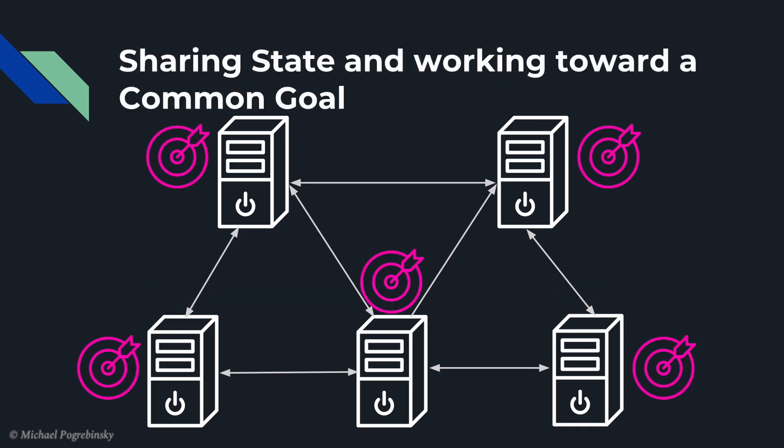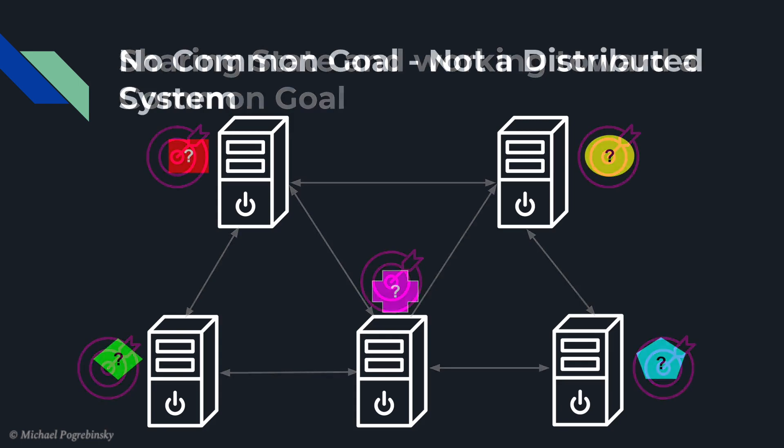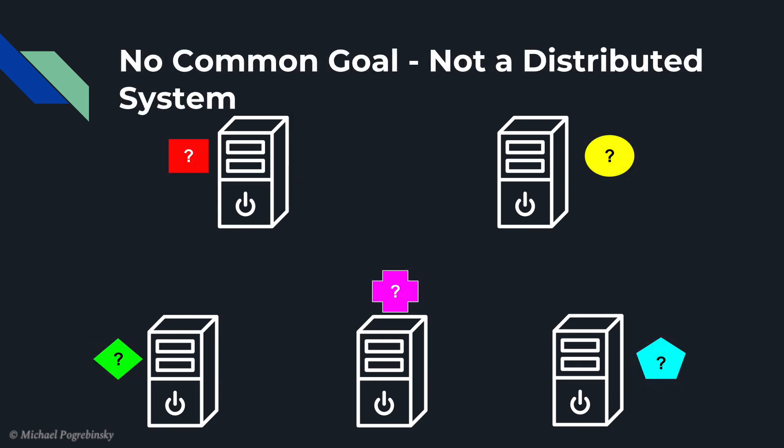And finally, once we establish that communication, our job is to build those processes in such a way that they maintain a shared view of the world in the form of a state, or work together to achieve a common goal. Otherwise, if each process doesn't know anything about the other, it's not a distributed system but just a collection of computers. So our goal is going to be building the algorithms in such a way that processes can collaborate with each other and constantly make progress towards that goal.